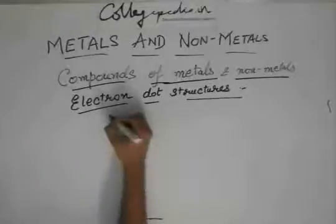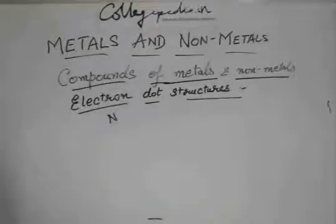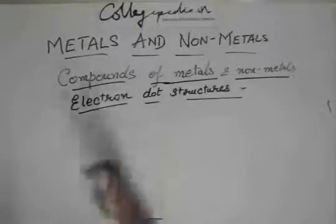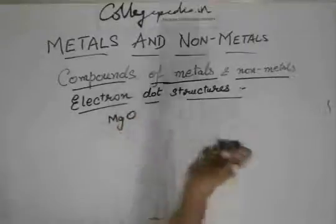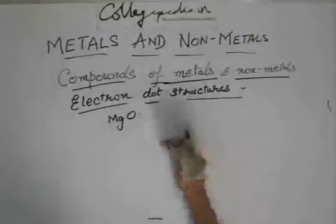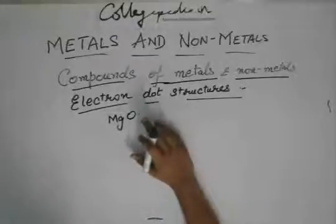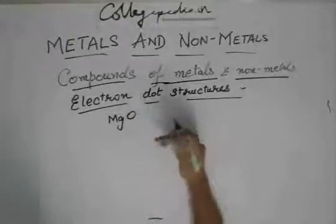You can try drawing this electron dot structure of, or not Na2O, try drawing the structure of MgO. First try, then I will show you.